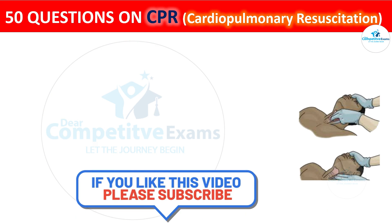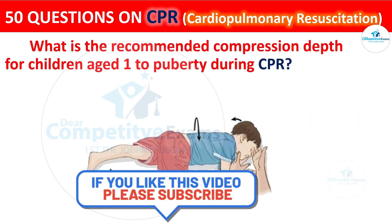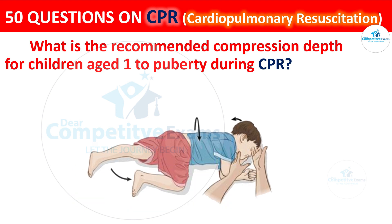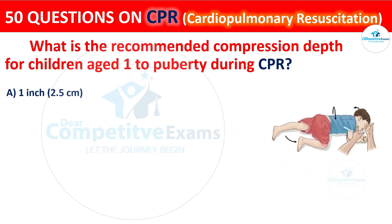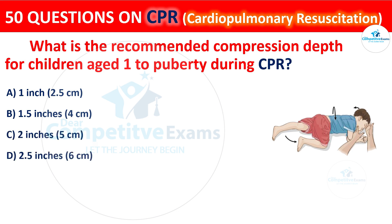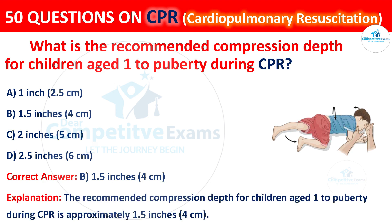Question 47: What is the recommended compression depth for children aged 1 to puberty during CPR? The options are: 1 inch (2.5 cm), 1.5 inches (4 cm), 2 inches (5 cm), or 2.5 inches (6 cm). The correct answer is B — 1.5 inches (4 cm). The recommended compression depth for children aged 1 to puberty during CPR is approximately 1.5 inches (4 cm).